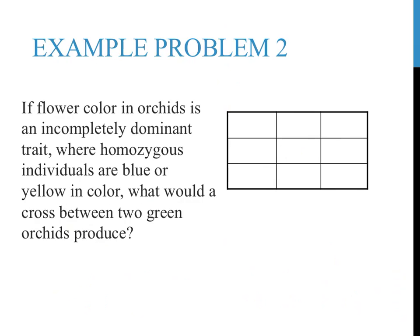The second problem reads: if flower color in orchids is an incompletely dominant trait, where homozygous individuals are blue or yellow in color, what would a cross between two green orchids produce? This problem is slightly more complex, as you need to do a little bit of work determining the genotypes and phenotypes of the parents. This problem suggests that individuals that are homozygous for traits are blue and yellow. For incompletely dominant problems, it doesn't matter which trait you represent with a capital letter or a lowercase letter, since neither trait is actually dominant.